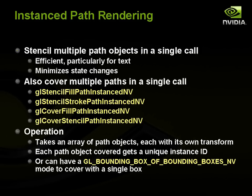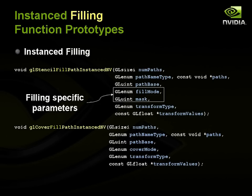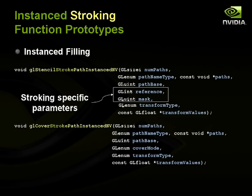The idea is that you can give an array of path objects, each with its own transformation, and then each path object gets covered with a unique instance ID. Or you can have a bounding box computed to cover them all in a single box, which would be really good for a line of text or maybe several lines of text. Here are the parameters for instanced filling — it's a lot like the command for GL stencil fill path without instanced, except with additional parameters where you can pass in an array of paths, a type for those paths, a path base, and an array of transformations. There are a couple different transform types supported, and the cover and stroking operations look similar.